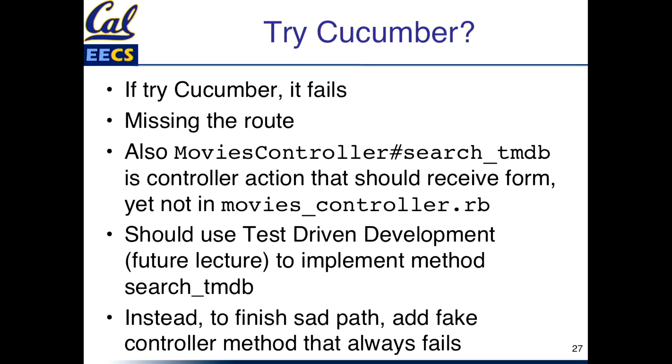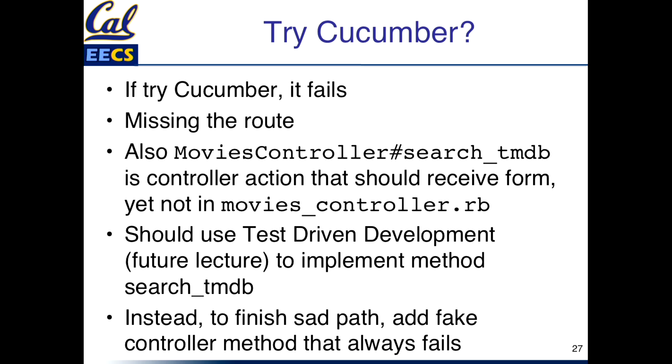If you were to try it now, it would say it's missing the route. So we have to add a route in movie_controllers.rb. We could then build the method that handles everything — giving an error message when it fails, or going out to TMDB to find the movie. Unfortunately, what you'd really do is start using test-driven development, which we haven't talked about yet. So right now we'll just do the sad path by having a fake method that always fails — it'll never find a movie, but it'll let the sad path pass. Armando will implement the happy path in a couple of lectures. The problem is you go back and forth between BDD and TDD, but pedagogically we have to do them one at a time. So we'll just do BDD today.